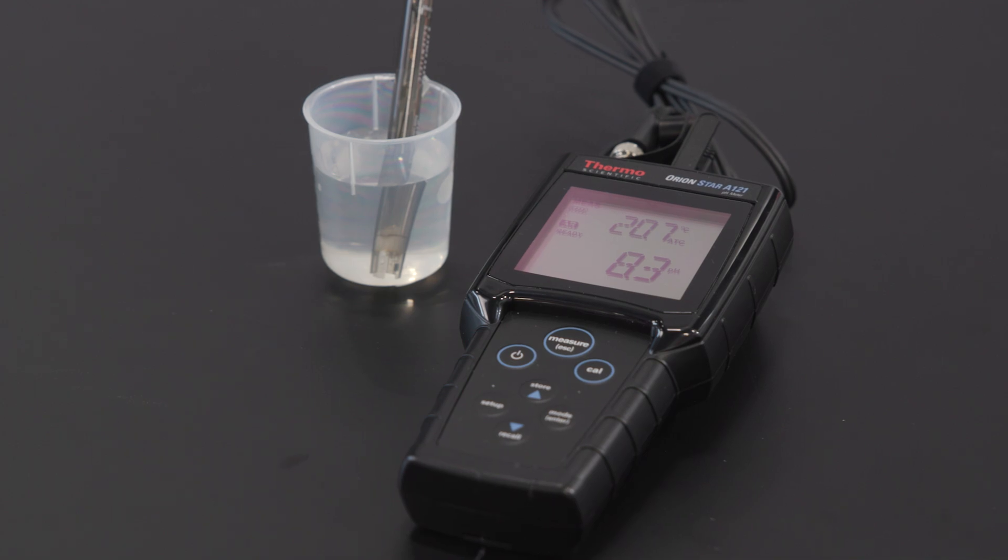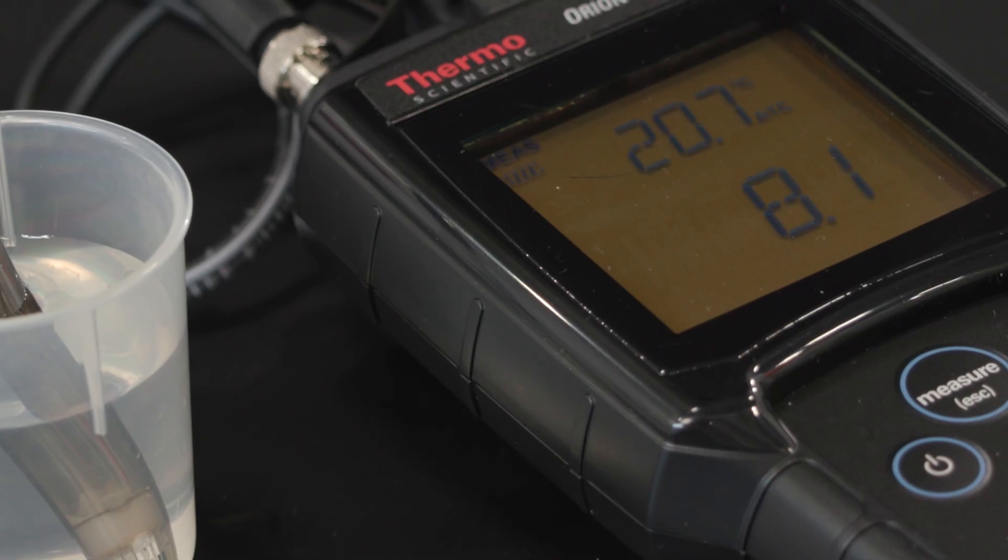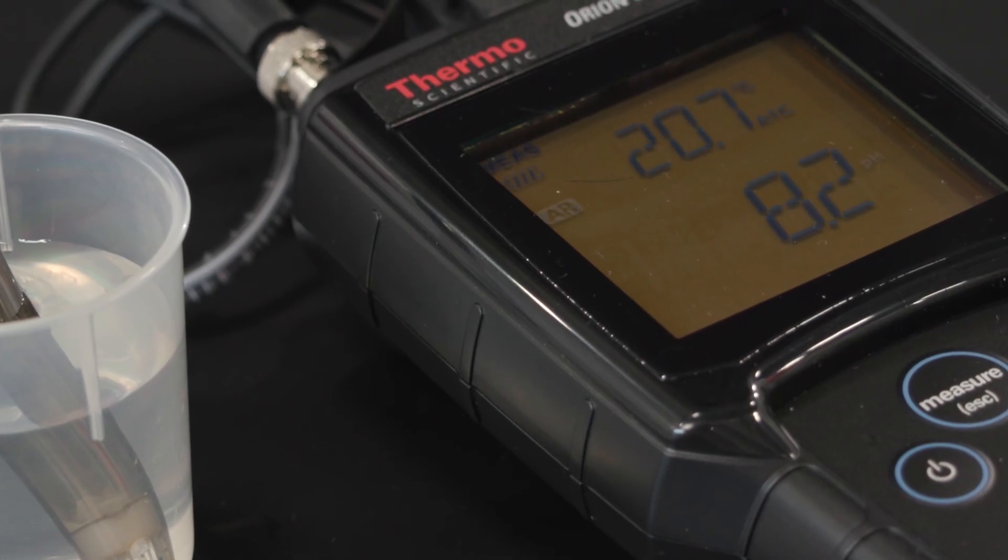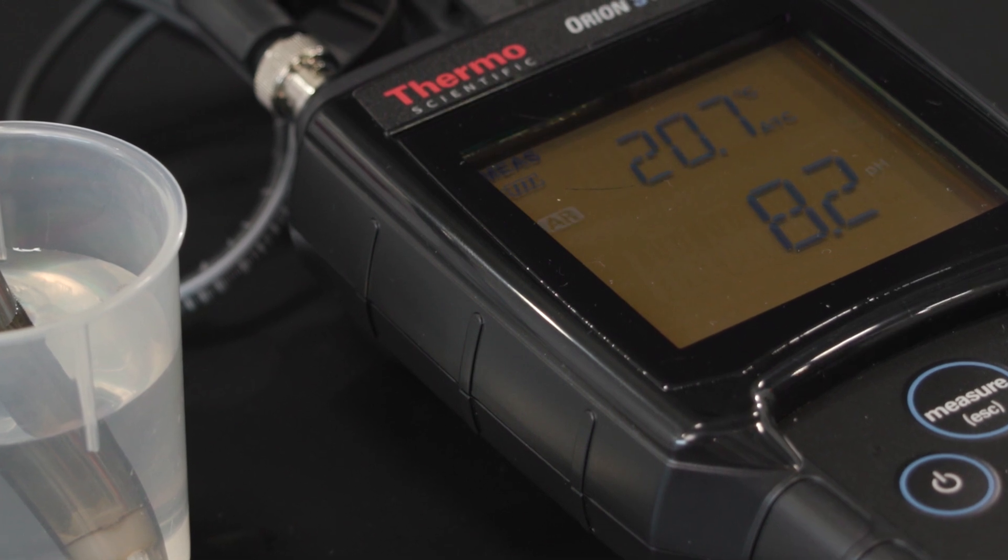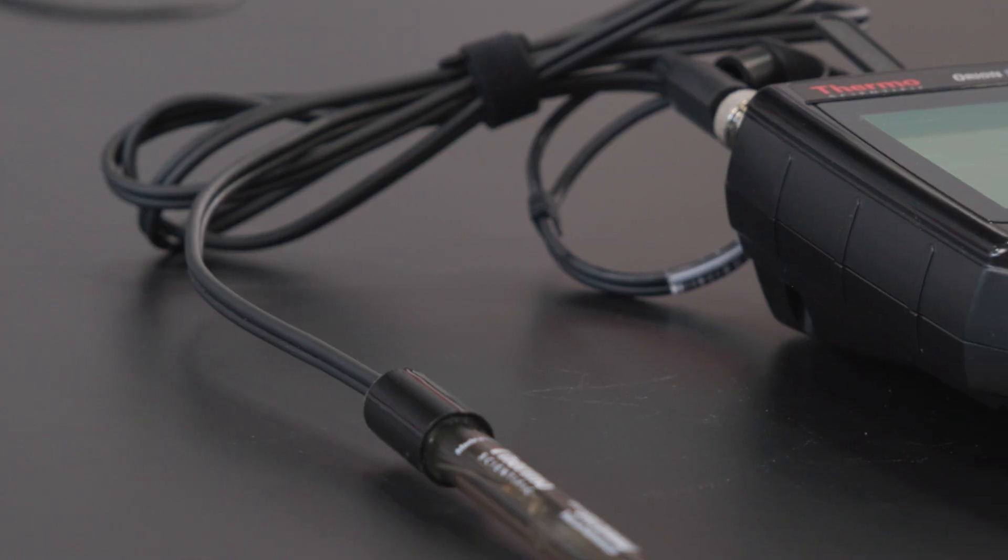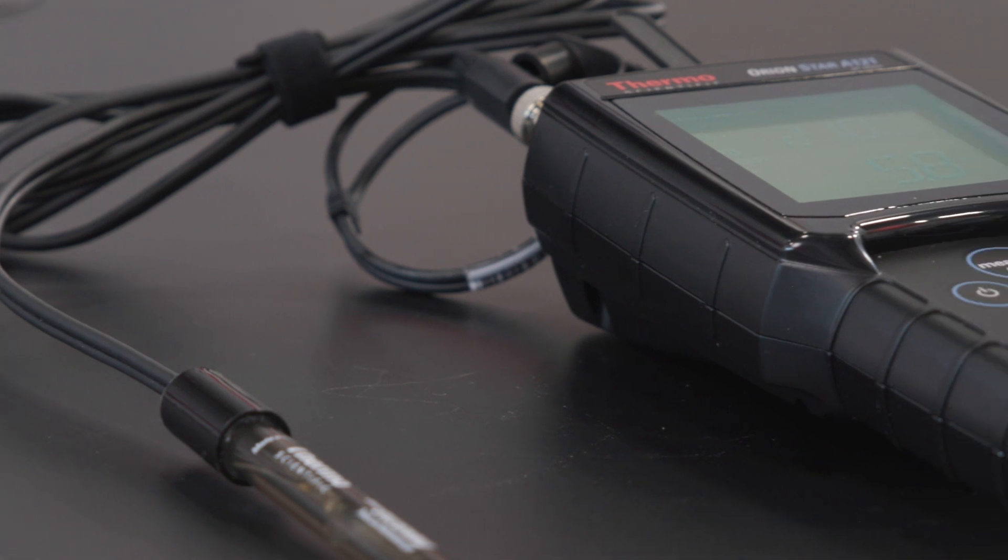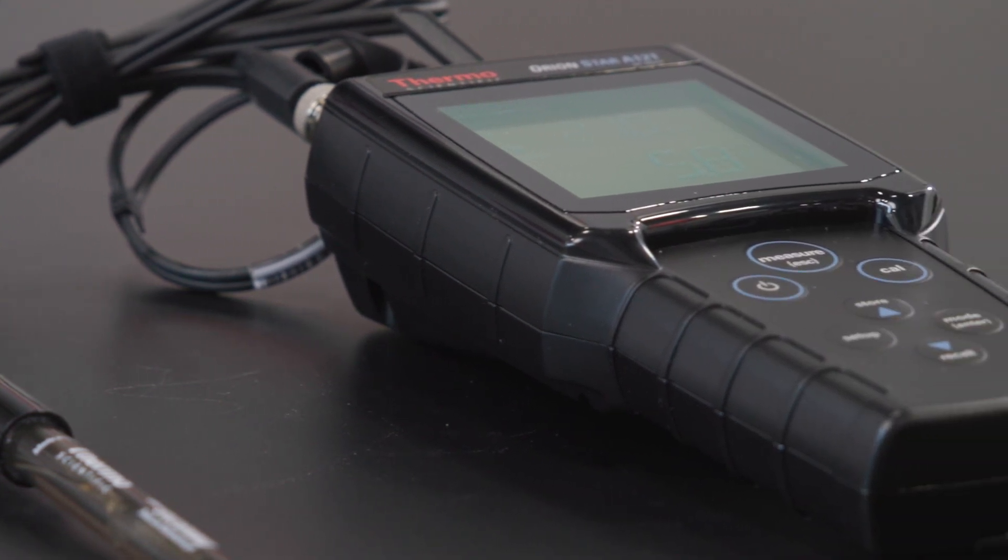If accuracy is important to you, look for a meter with automatic temperature compensation. Since temperature influences pH during calibration and testing, a meter with automatic temperature compensation can provide more reliable results.